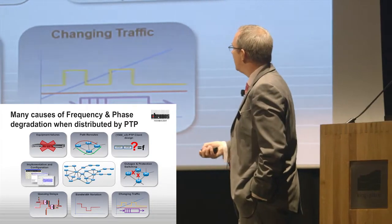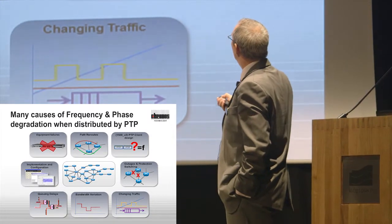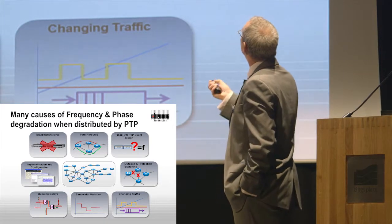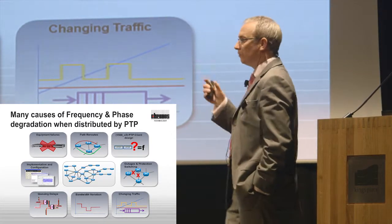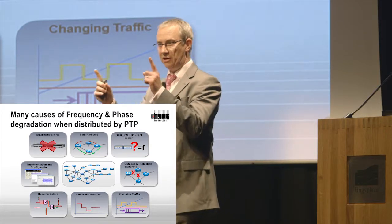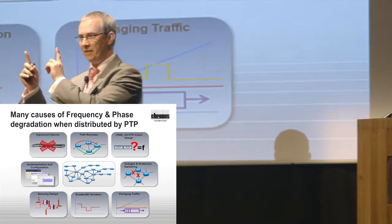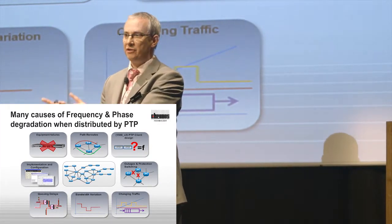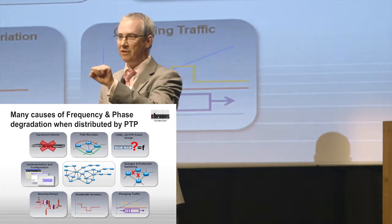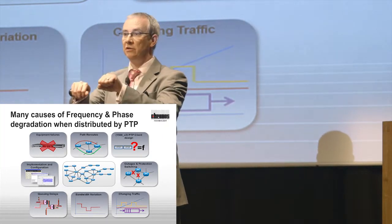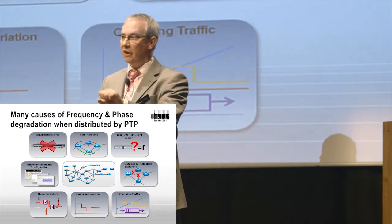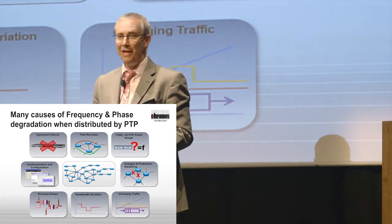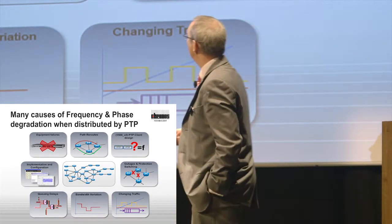We've got queuing delays, bandwidth variation — this is a very complex network. We've got outages and protection switching. PTP, the protocol, is standardized, but the client that equipment vendors put in their products is not standardized. They have a software algorithm and a clock, and some choose to invest more in the hardware clock and some more in the software algorithm. So the performance will vary and be different — that's a real challenge.